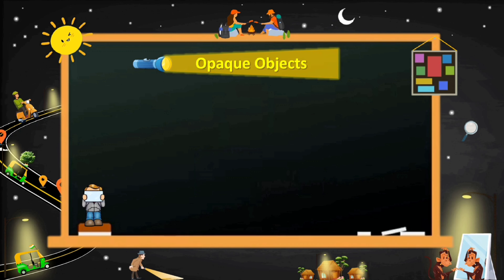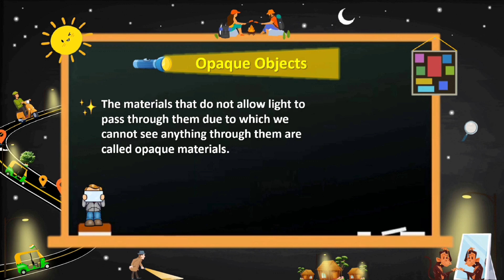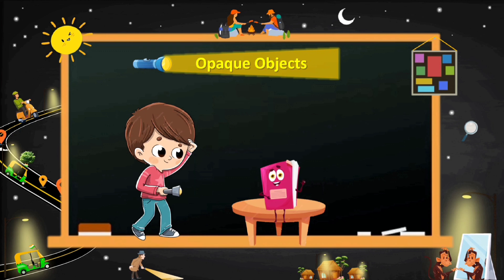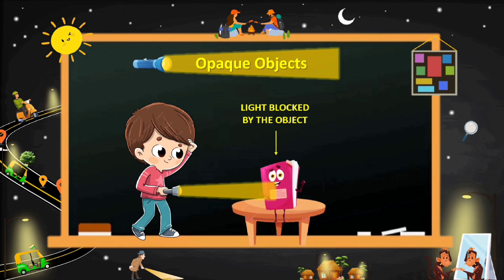The materials that do not allow light to pass through them, due to which we cannot see anything through them, are called opaque materials. Opaque materials are the ones that do not allow any light to pass through them. These are also the objects that create our shadows.